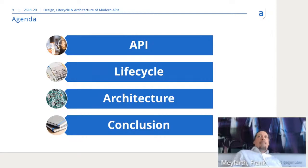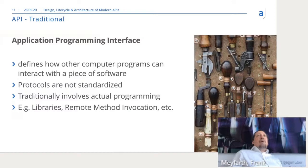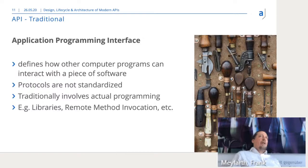Let's start with API. Traditionally, API means application programming interface, and it really was about how one computer program can interact with another. That included real programming in a programming language, and the protocols used were not standardized. We still have that type of API nowadays, like in libraries or remote method invocation, but that's not what we're talking about today.